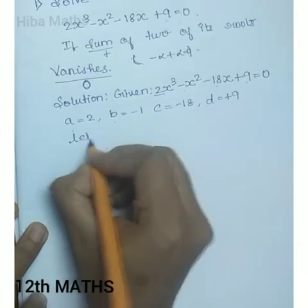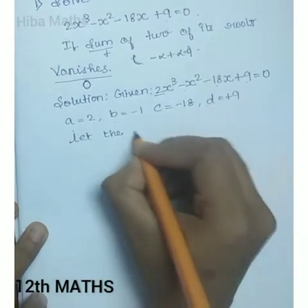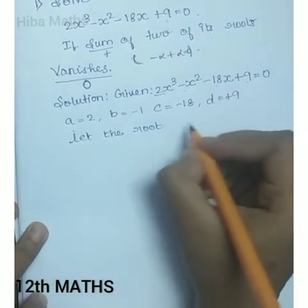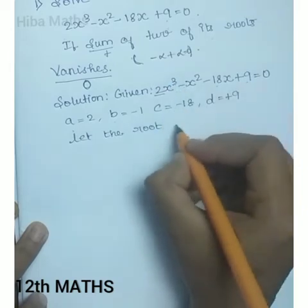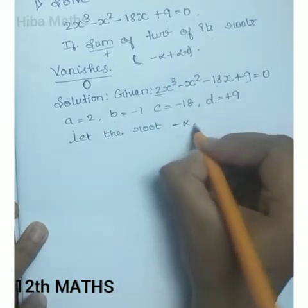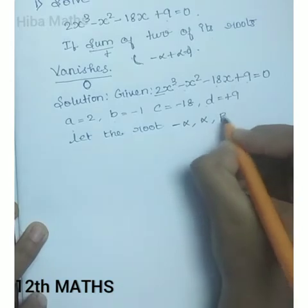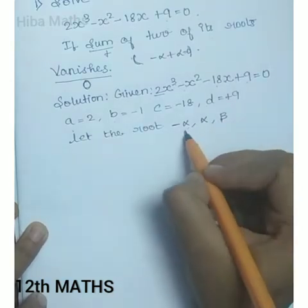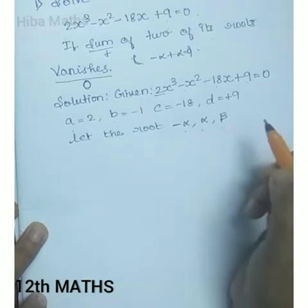Let the roots be three roots for a cubic equation. Let the roots be -α, α, and β — since the sum of two of them vanishes, we take -α and α.